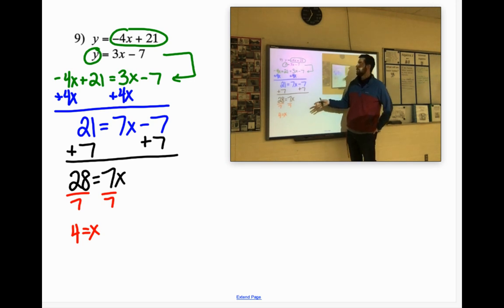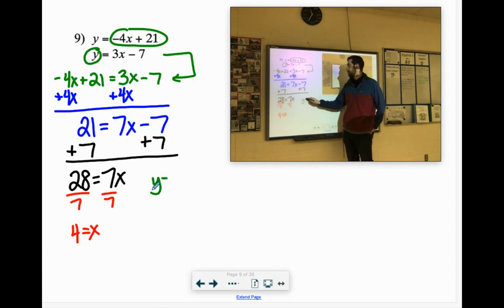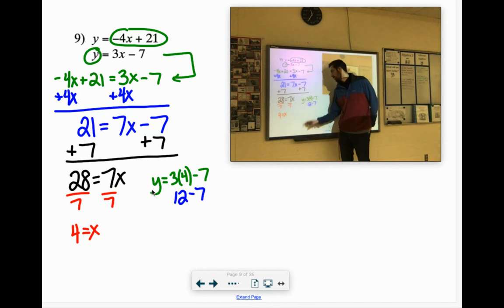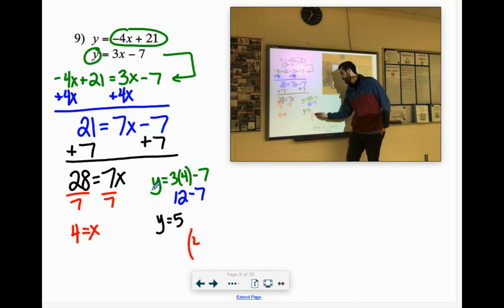We ended up getting 4 for x, subbing it back in. I'm going to go with the second equation. y equals 3x, x equals 4, so 3 times 4 minus 7. Now 3 times 4, 12, yes, and 12 minus 7 gives us 5. Now, so we write it as a coordinate. x was 4, y was 5. Sweet.